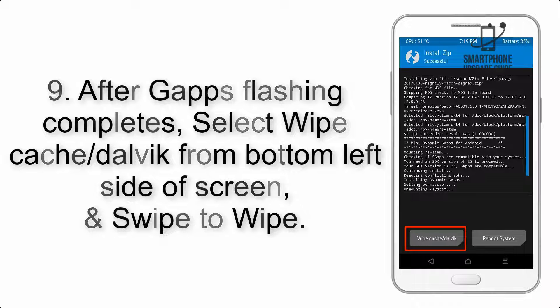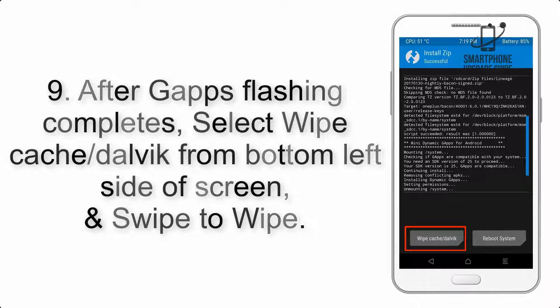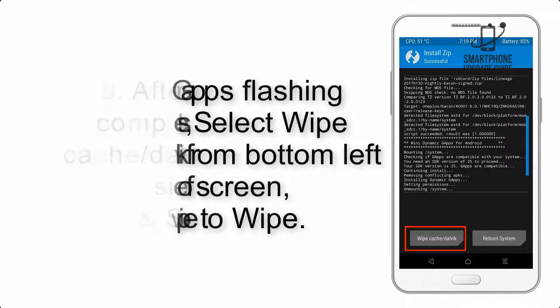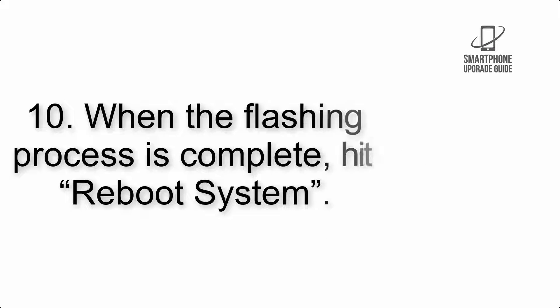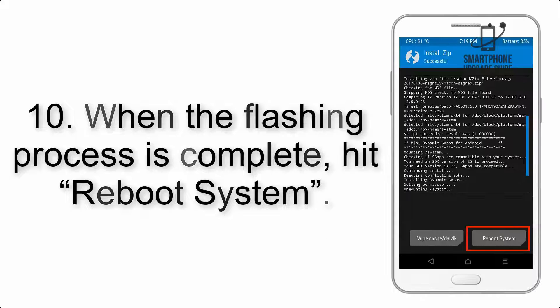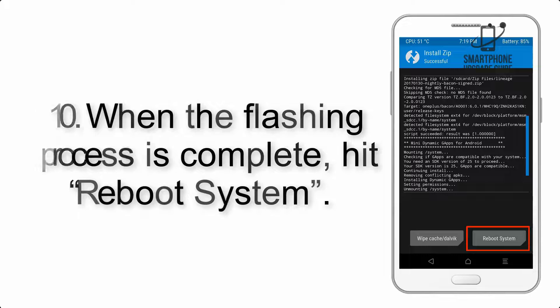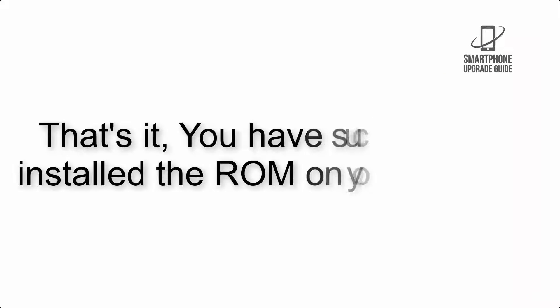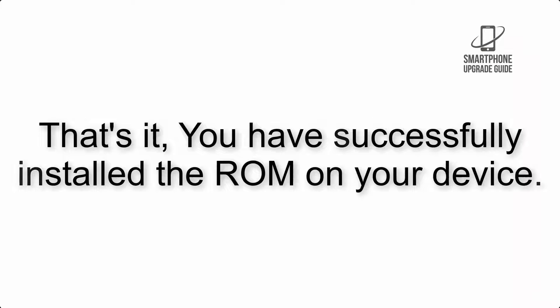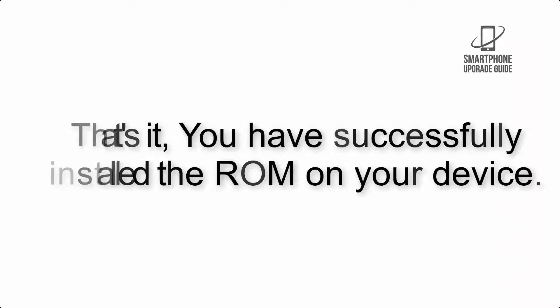Step 9: after GApps flashing completes, select Wipe Cache and Dalvik from the bottom left side of the screen and swipe to wipe. Step 10: when the flashing process is complete, hit Reboot System. That's it — you have successfully installed the ROM on your device.